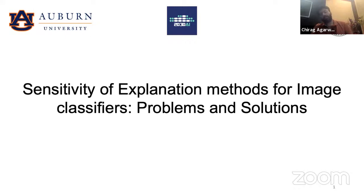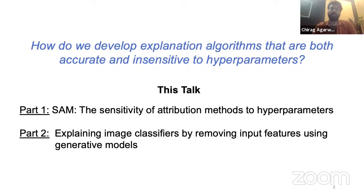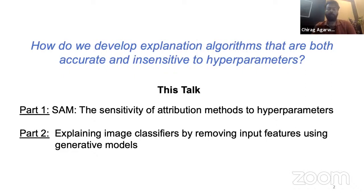In today's talk I'll be trying to answer the question: how do we develop explanation algorithms that are both accurate and insensitive to their respective hyperparameters? In the first part of the talk I'll be presenting our CVPR-OR paper of 2020, called SAM — the Sensitivity of Attribution Methods to Hyperparameters. In the second part I'll be presenting our work accepted at Asian Computer Vision, which was on explaining image classifiers by removing input features using generative models. Feel free to interrupt and ask questions.